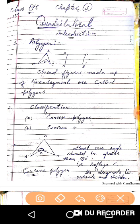The next point is that we can classify the Polygon into two types. One is a Convex Polygon and another one is a Concave Polygon.